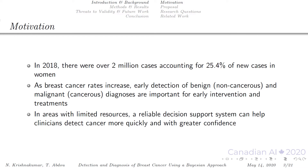Breast cancer is a growing health concern and is the most common cancer found among women. In the year 2018 alone there were over 2 million cases accounting for 25.4 percent of all new cases in women. As breast cancer rates increase, early detection of benign and malignant diagnoses are becoming more important for early intervention and treatments. In areas with limited resources, a reliable decision support system can help clinicians detect cancer quickly and with greater confidence.